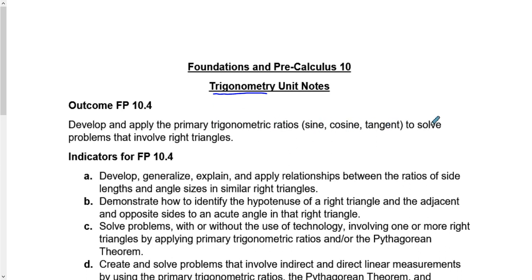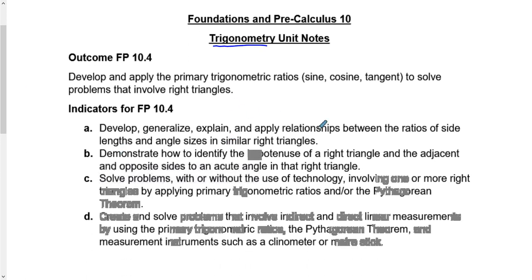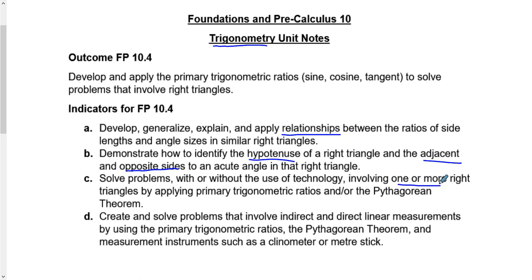What you're going to be doing is developing and applying primary trig ratios — the sine, cosine, and tangent ratios — to solve problems that involve right triangles. The big things include applying the relationships, identifying hypotenuse, adjacent, and opposite sides, and solving problems with and without technology involving one or more triangles. That is the big distinction between Workplace 10 and Foundations 10: in Foundations pre-calc 10, we have more than one triangle.